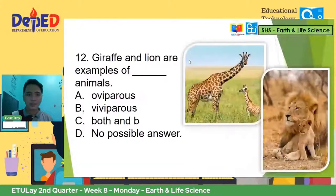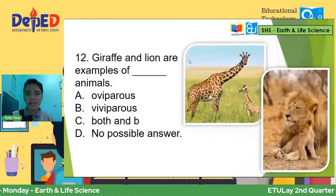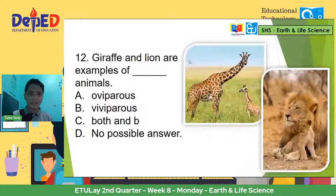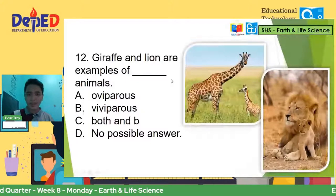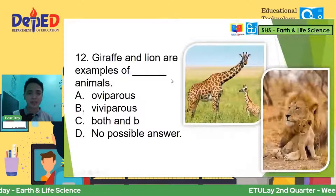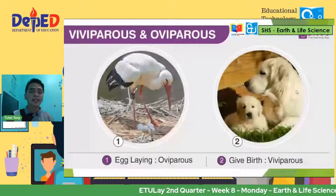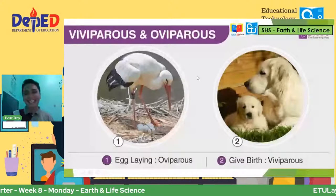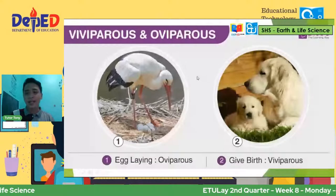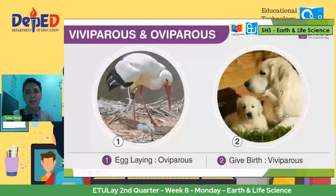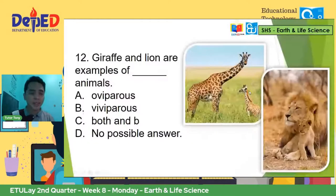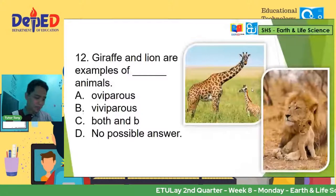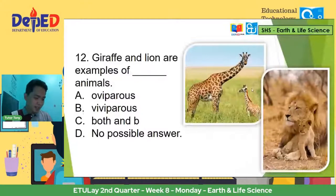Number twelve: giraffe and lion — are they oviparous or viviparous animals? Pag sinabi nating viviparous, they are the egg-laying animals like the birds and the reptiles. Yung mga tao, hindi naman tayo naglilay ng eggs — sa biology, viviparous naman. They give birth just like humans — mga mammals. So the answer for number twelve is letter B: viviparous. Correct, Miss Jessica and Miss Angel.